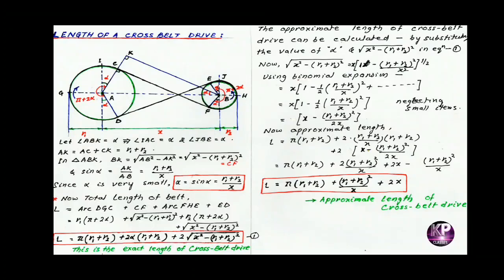In open belt drive, both pulleys revolve in the same direction, but in cross belt drive both revolve in opposite directions. If the driver rotates in the clockwise direction then the follower will rotate in the anticlockwise direction. R1 is the radius of the driver, R2 is the radius of the follower, and the distance between the centers of the two pulleys is equal to X.